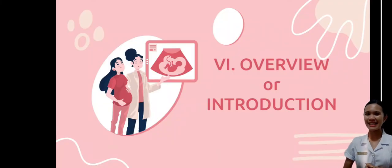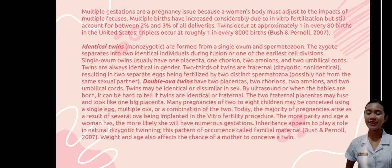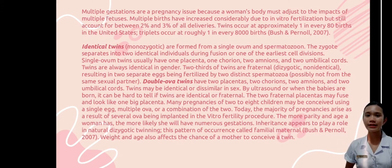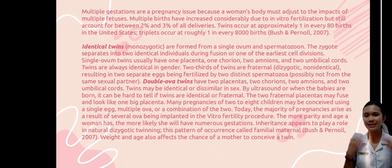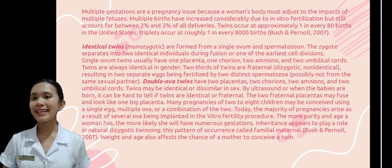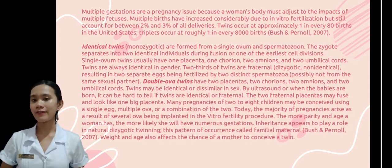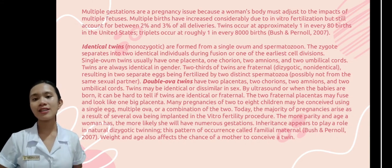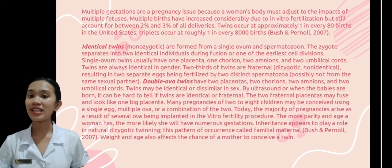Now for the overview or introduction of our topic. Multiple gestations are a pregnancy issue because a woman's body must adjust to the impacts of multiple fetuses. Multiple births have increased considerably due to in-vitro fertilization but still account for between 3% of all deliveries. Twins occur at approximately 1 in every 80 births. In the United States, triplets occur at roughly 1 in every 8,000 births. Identical twins or monozygotic are formed from a single ovum and spermatozoon. The zygote separates into two identical individuals during one of the earliest cell divisions. Single-ovum twins usually have one placenta, one chorion, two amnions, and two umbilical cords. Twins are always identical in gender in identical twins.